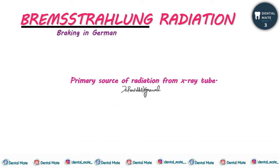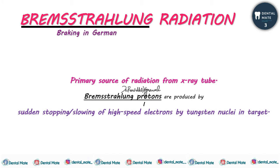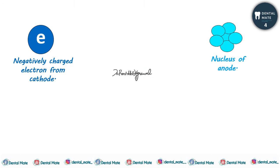Bremsstrahlung radiation is the primary source of radiation from the X-ray tube. Bremsstrahlung photons are produced by the sudden stopping or slowing down of high-speed electrons by the tungsten nuclei in the target. The tungsten target nuclei suddenly stop or slow down the high-speed electrons, and because of that Bremsstrahlung photons — X-ray photons — are produced.